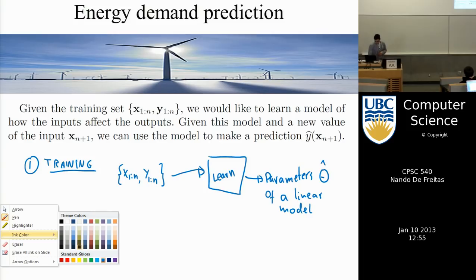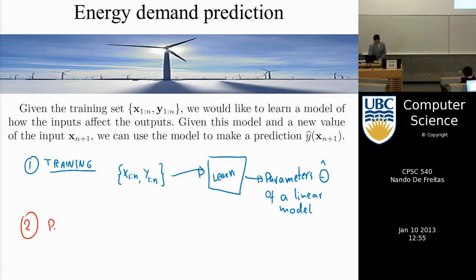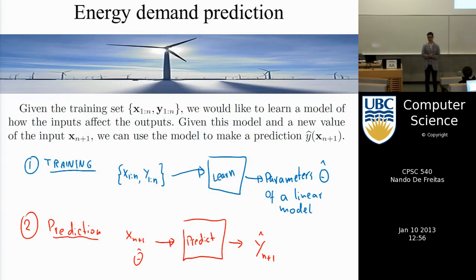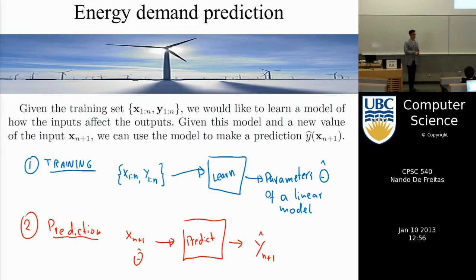The second phase is prediction. In prediction we take a new point x_{N+1} that we hadn't seen before and combine it with our estimate of θ from training to produce a prediction ŷ_{N+1}. The hat indicates prediction. We use N training samples to infer θ, then use θ to predict for new inputs — for example, given new wind speeds and student counts, automatically predict how to adjust the thermostat.